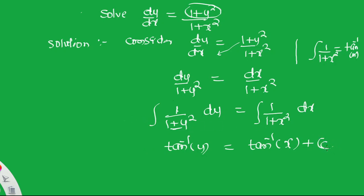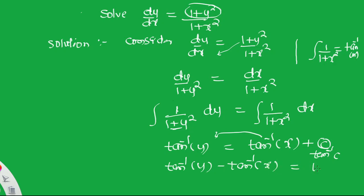We write the constant C as tan⁻¹c. Rearranging, we get tan⁻¹y − tan⁻¹x = tan⁻¹c. Now we need to apply the formula for tan⁻¹y − tan⁻¹x.